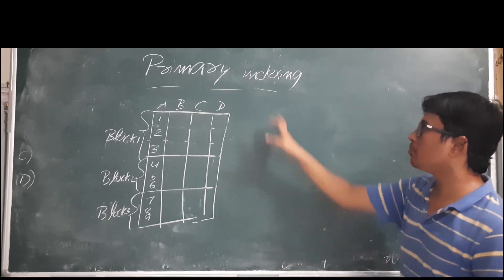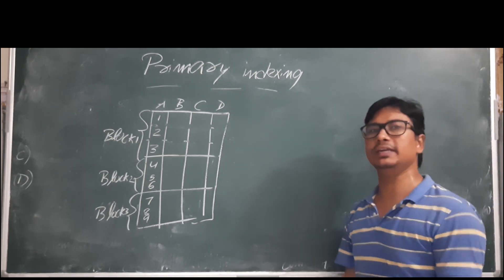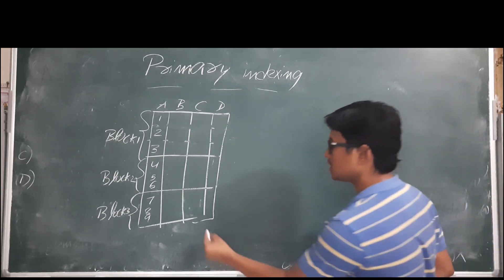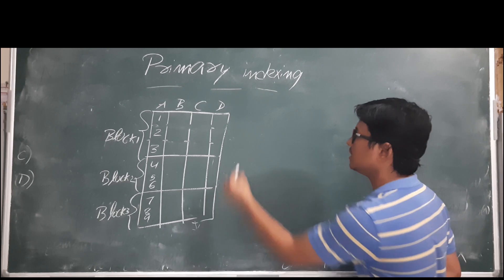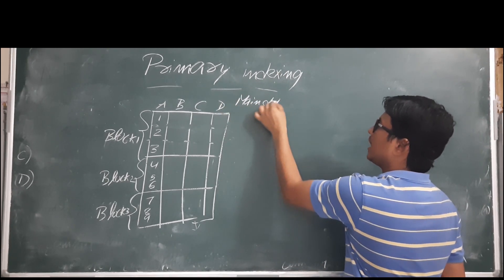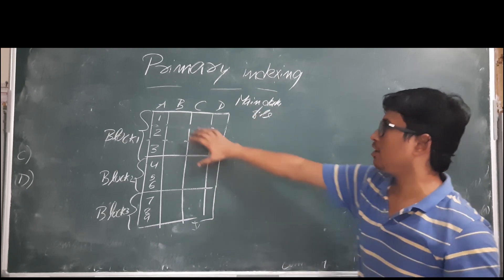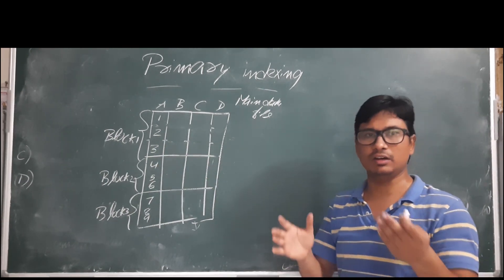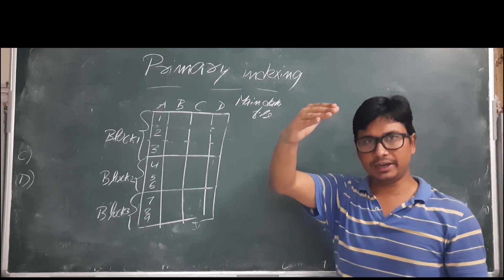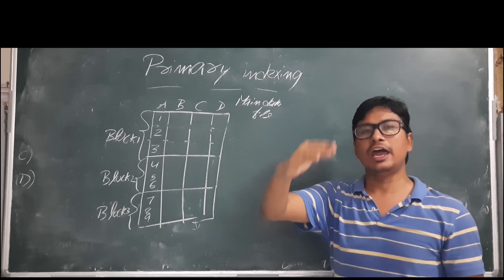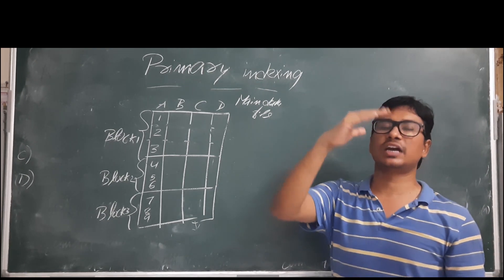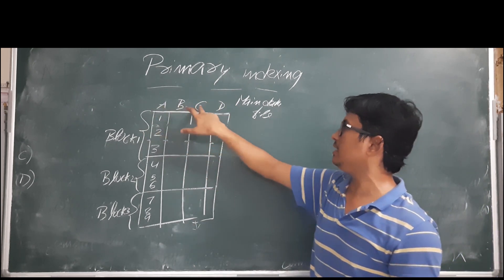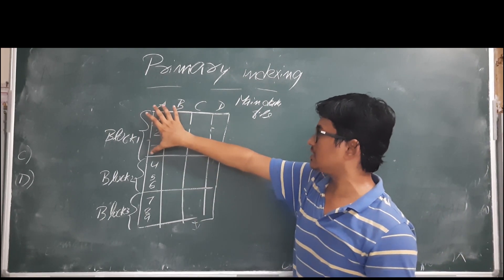Primary indexing is called so because the indexing is done on the primary key of the main table. Suppose we have a main data file with a certain number of records. A file consists of records, and a record is a collection of fields. We have already discussed that a database is a collection of files, a file is a collection of records, and a record is a collection of fields. Let's say our data file has four fields: A, B, C, and D.